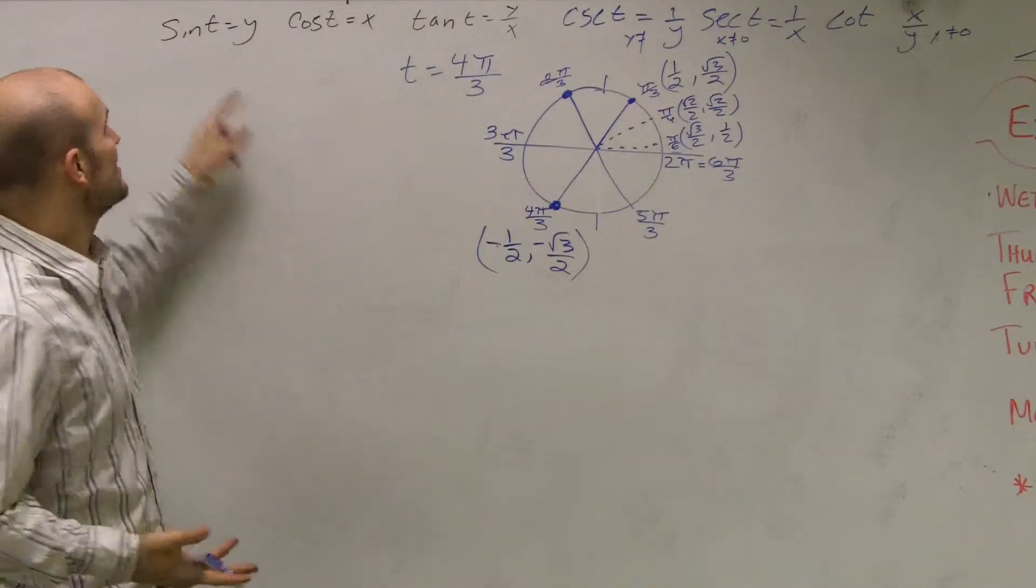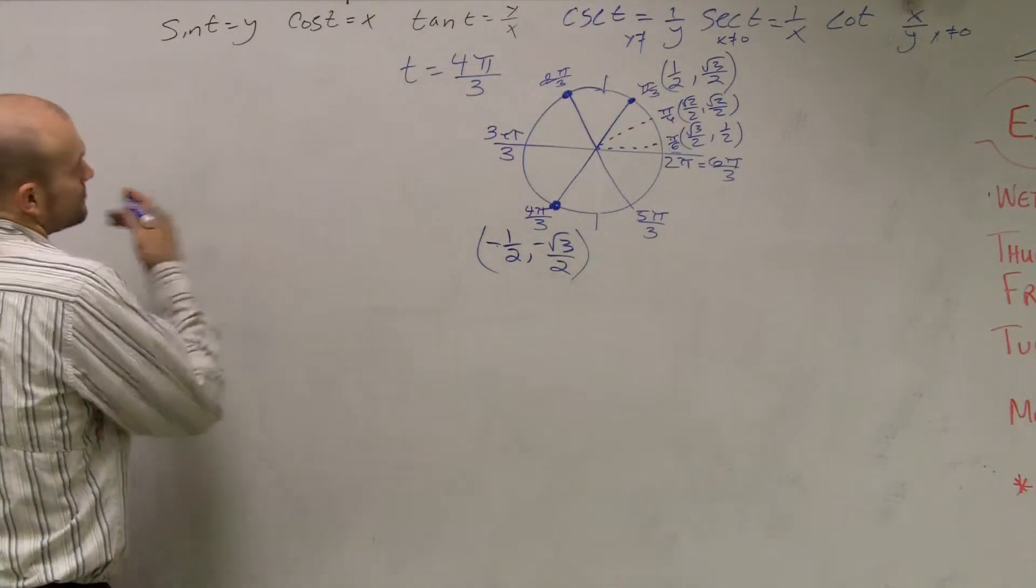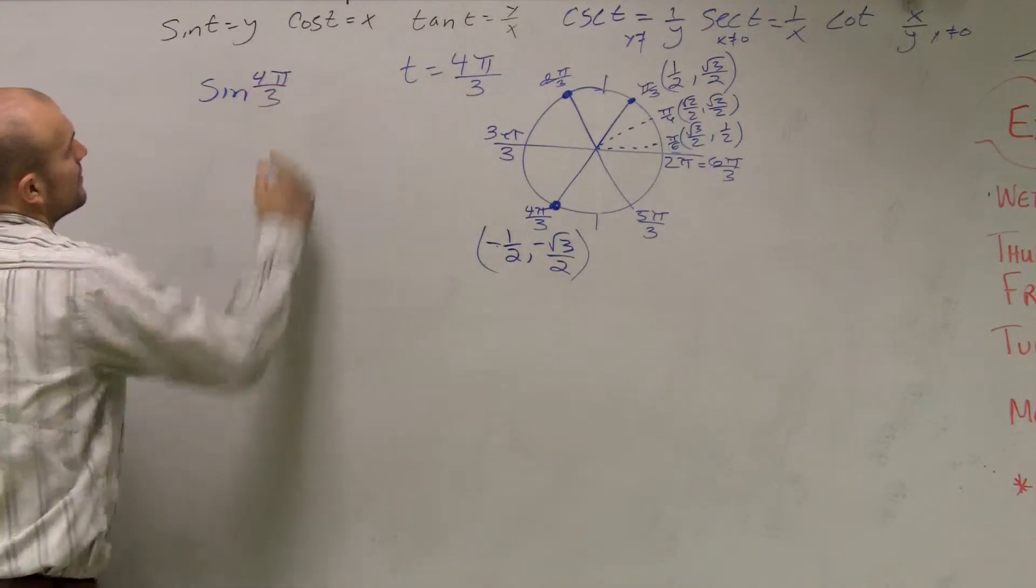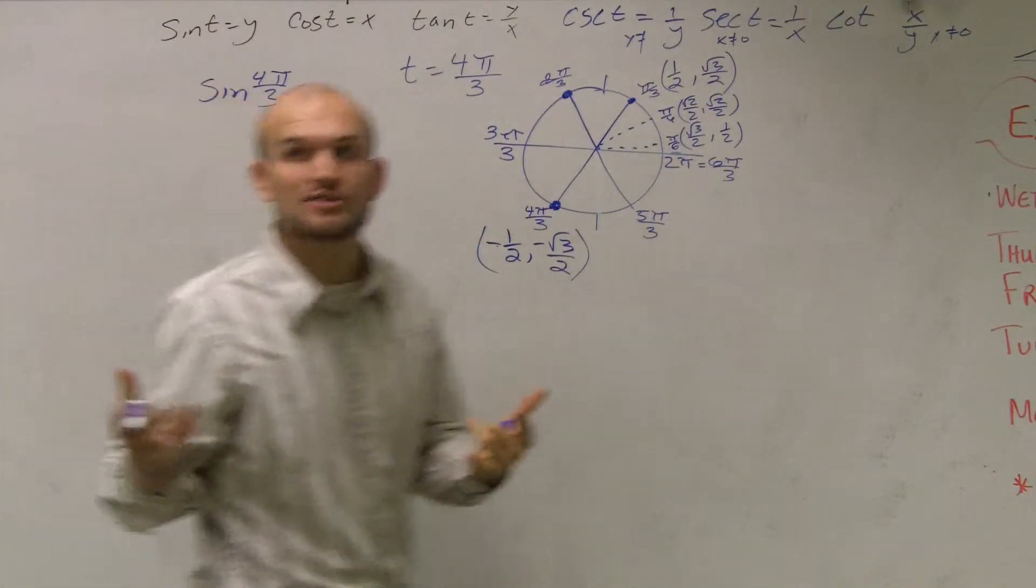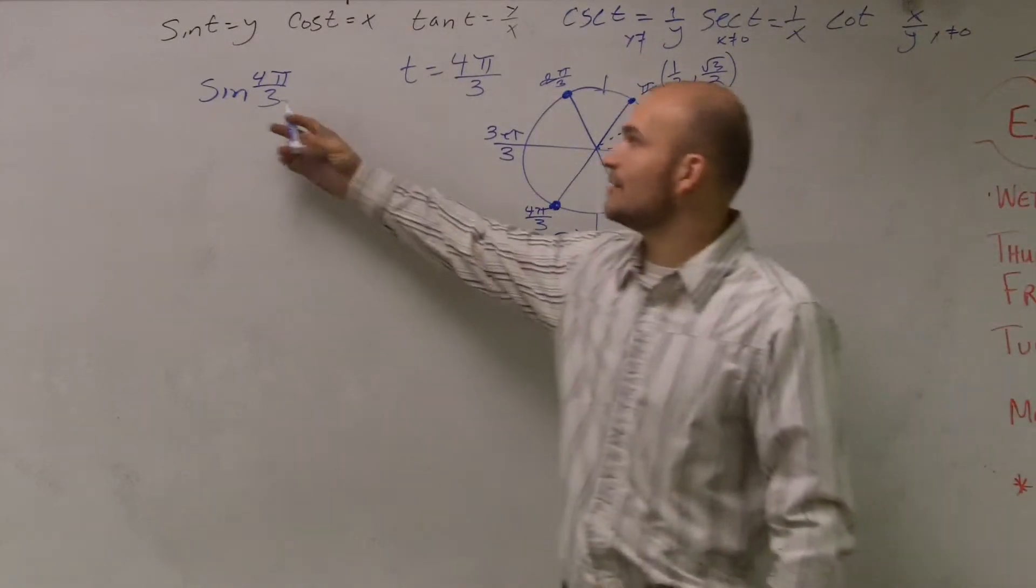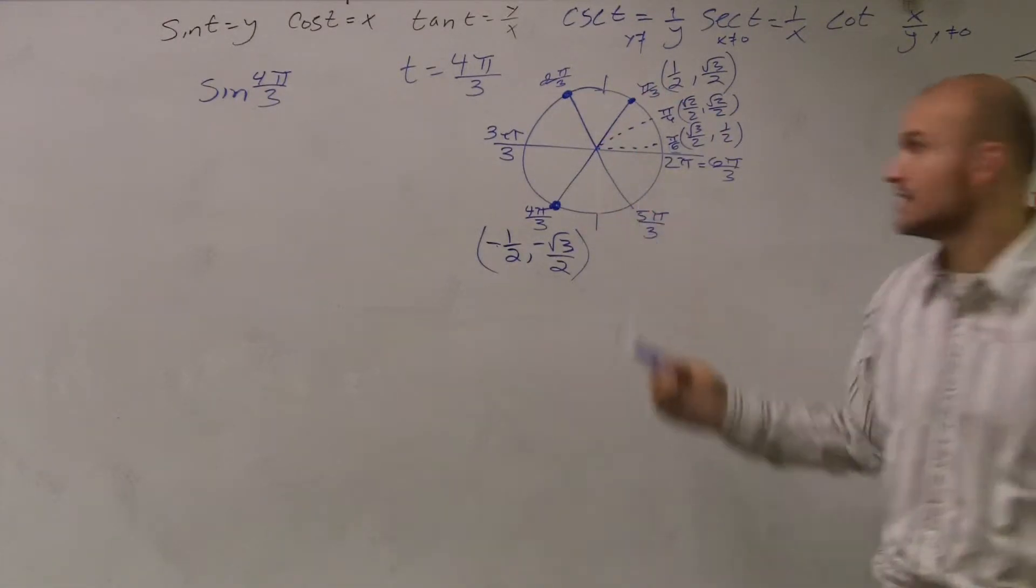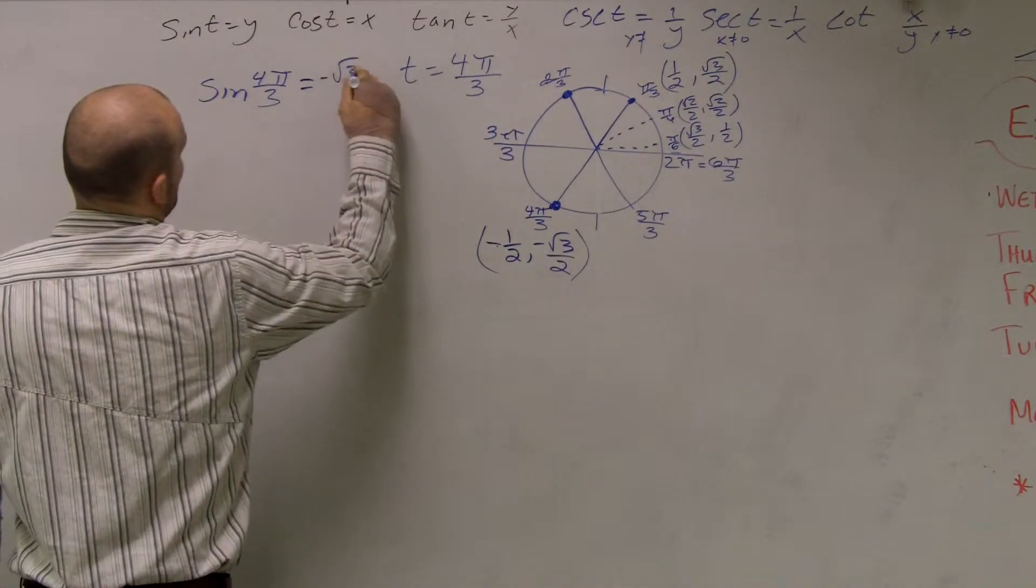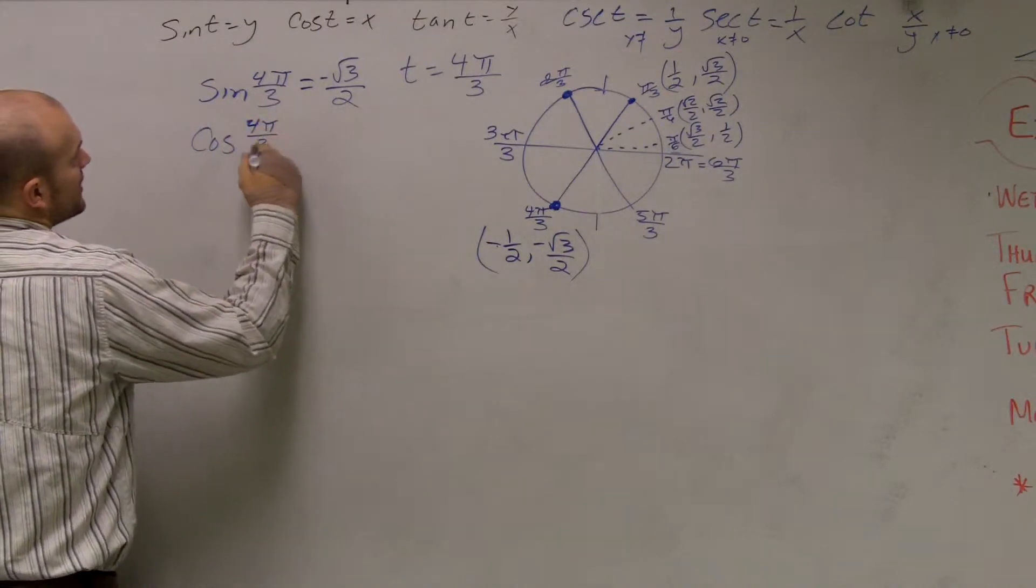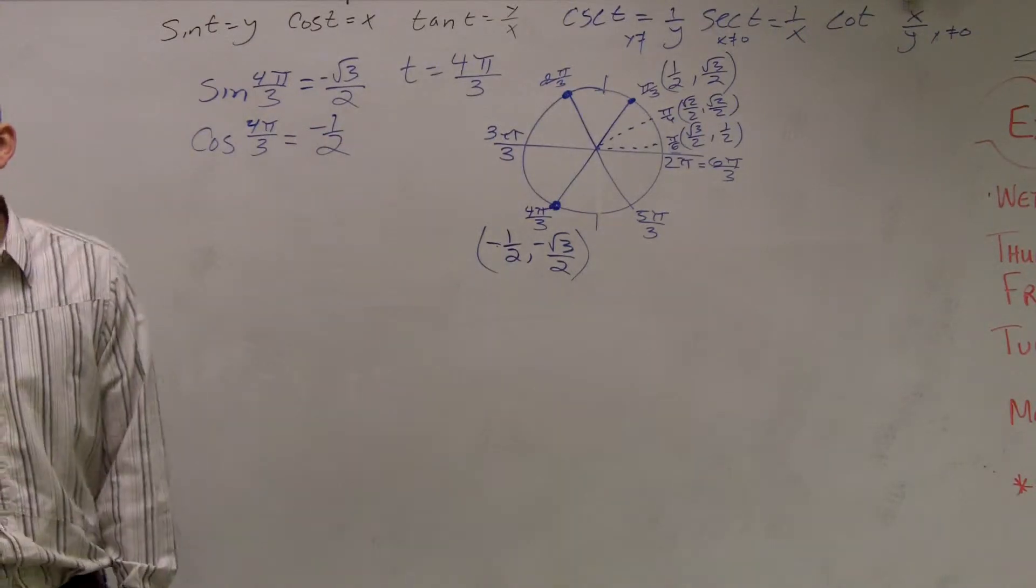So now the question says find sine, cosine, tangent, cosecant, secant, and cotangent. So sine of my angle, which is 4π over 3. So remember, sine of t, if I want to evaluate my function, when I evaluate my function for t, that's going to be my y value. So if I evaluate sine for 4π over 3, that's the y value of my point. The y value of my point is negative root 3 over 2. Cosine of 4π over 3 is my x value. Those are pretty simple, right? Not too bad.